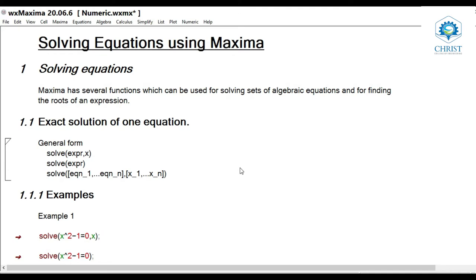There are different types of equations in mathematics, such as polynomial equations, trigonometric equations, system of linear equations, etc. Similarly, there are many methods to solve these types of equations — factorization method, substitution method, matrix method, etc. In this video, I am going to discuss how Maxima helps to solve different types of equations using its built-in functions.